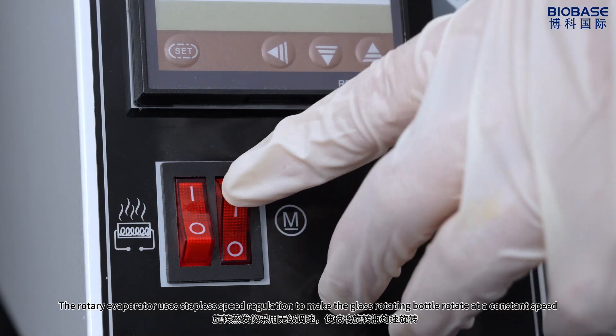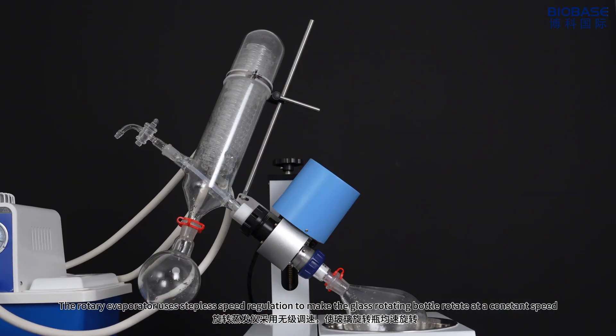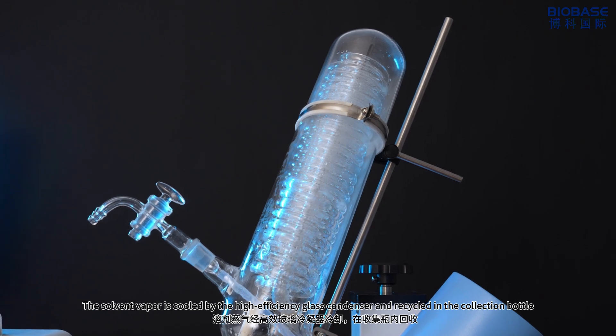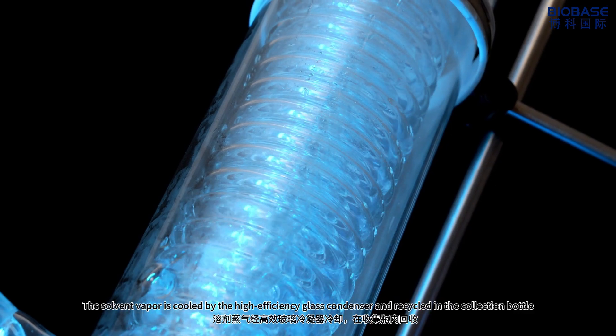The rotary evaporator uses stepless speed regulation to make the glass rotating bottle rotate at a constant speed. The solvent vapor is cooled by the high-efficiency glass condenser and recycled in the collection bottle.